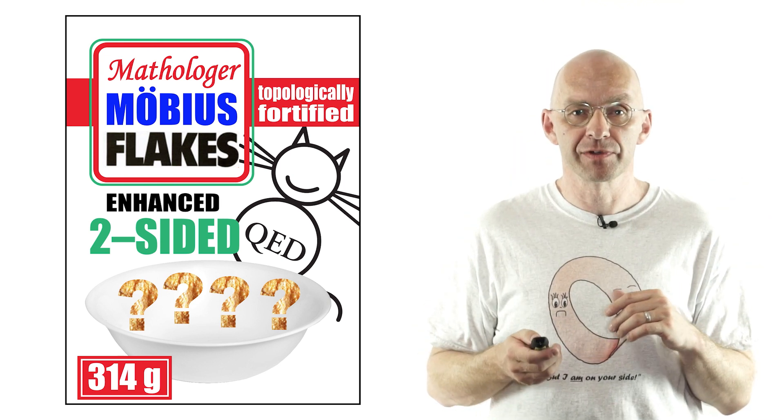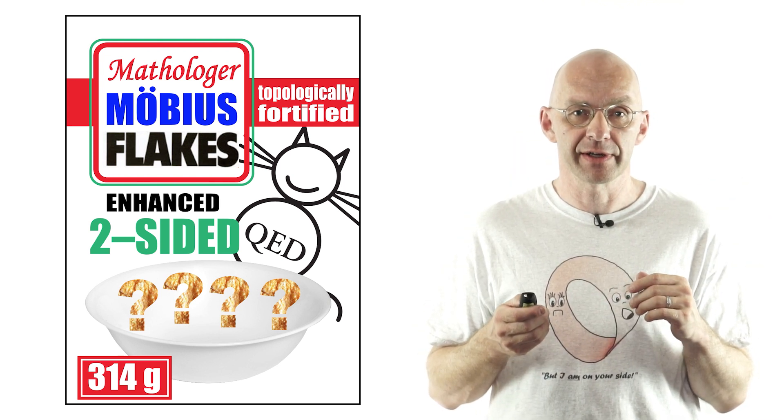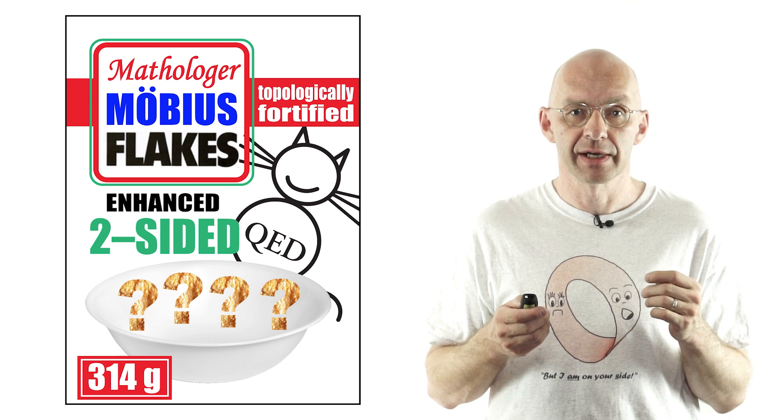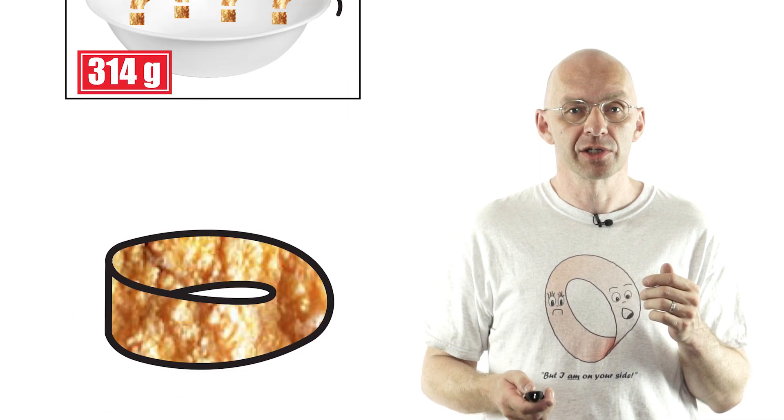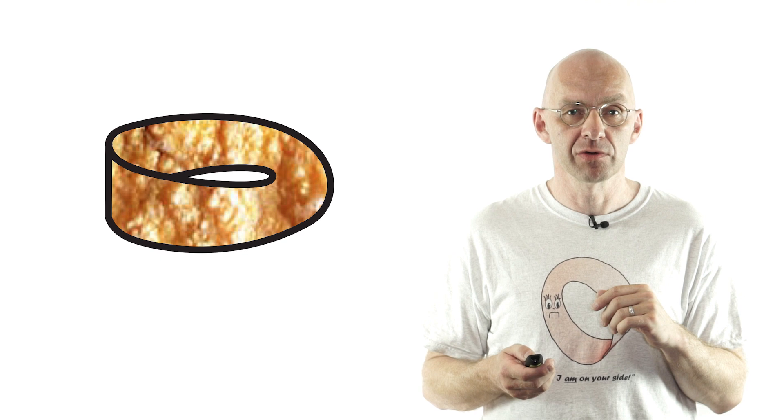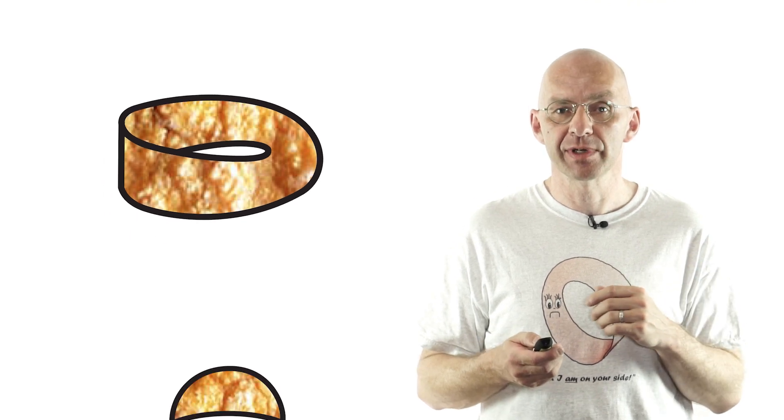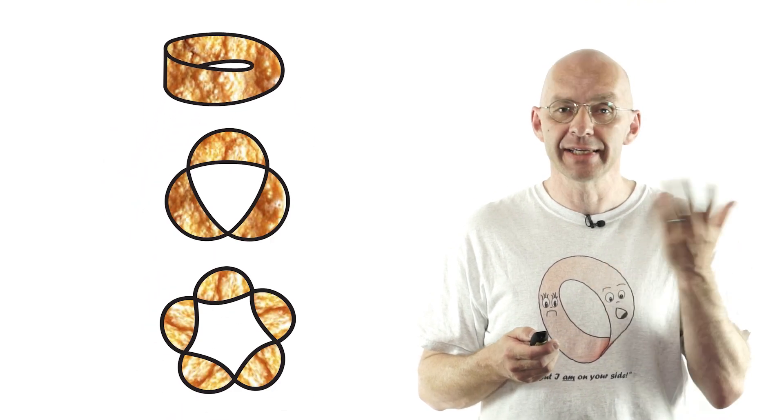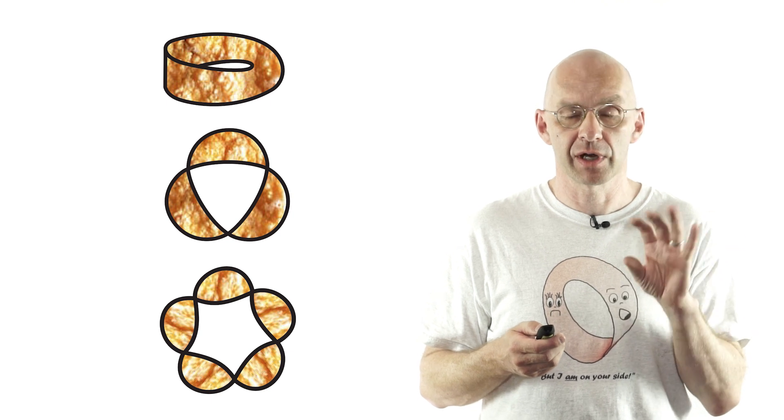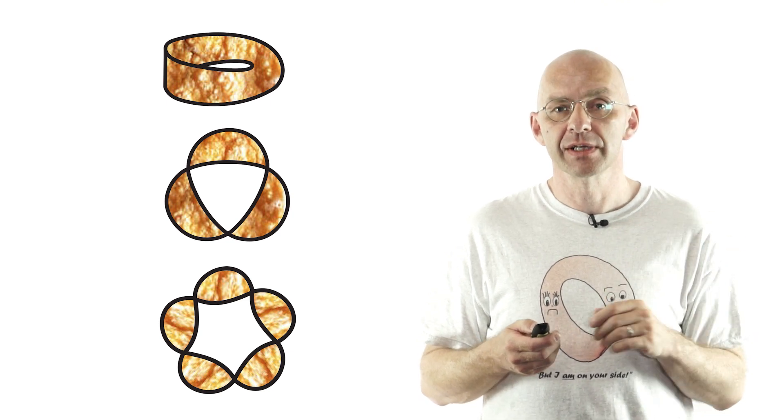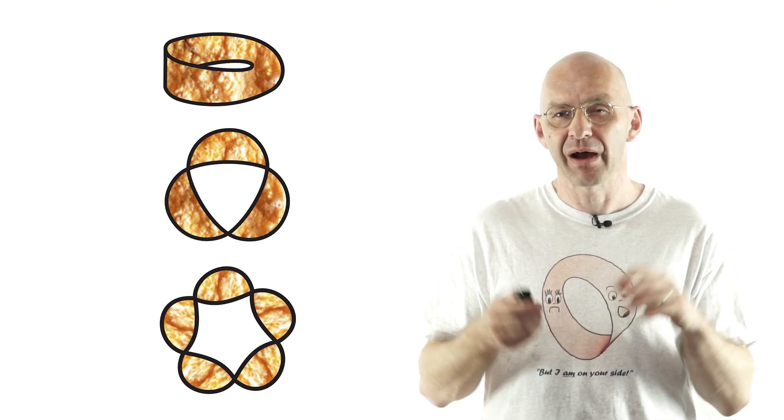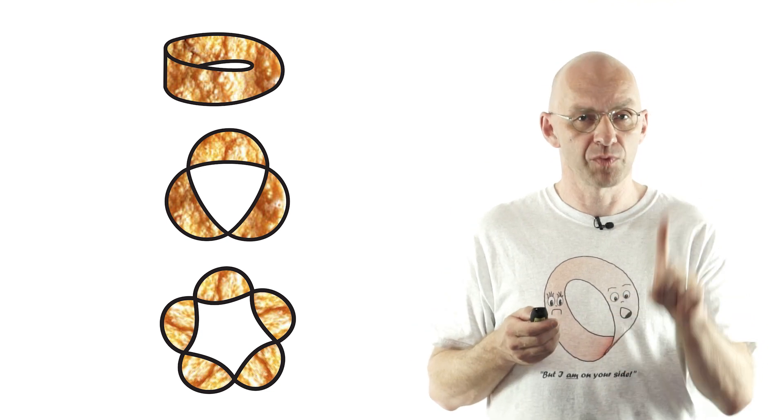Now there are actually a couple of different ways to bring the ends together by twisting them to make the strip into a Möbius strip. You can just go one twist and glue and that gives you a Möbius strip, three twists or five twists or any odd number of clockwise or counterclockwise twists that will yield a Möbius strip. Now all these Möbius strips have just one side.